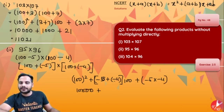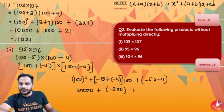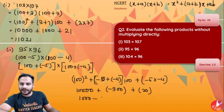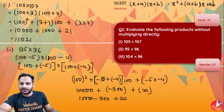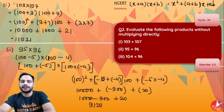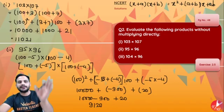That gives 10,000 + (−9)×100 + 20 = 10,000 − 900 + 20. So 10,000 − 900 is 9,100, and 9,100 + 20 is 9,120. So the answer is 9,120.